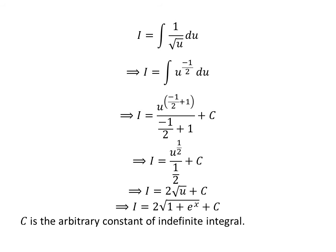We have solved the integral in terms of u. Now, we need to take back the expression in terms of x. For that, I have replaced u by 1 plus exponential of x which we had assumed earlier. So, i is equal to 2 times square root of 1 plus exponential of x plus capital C.